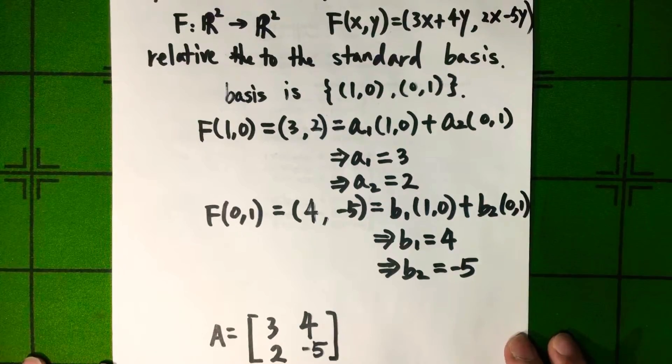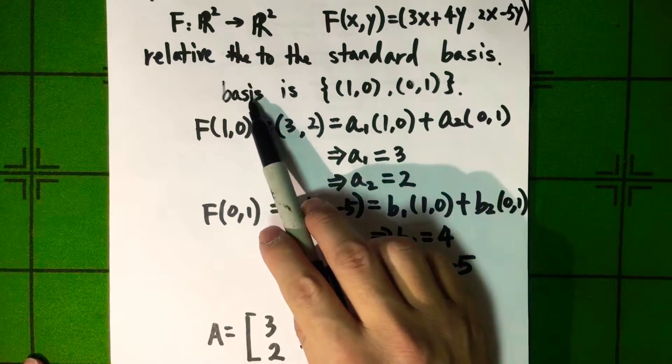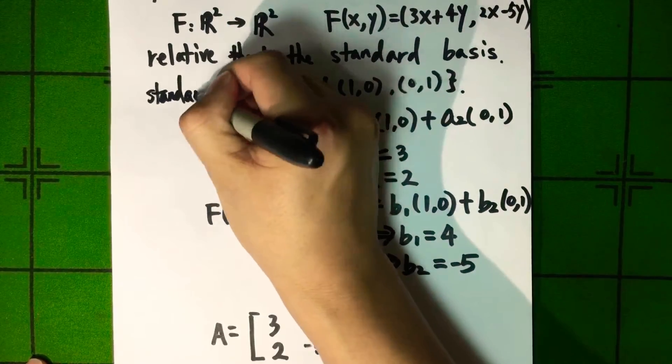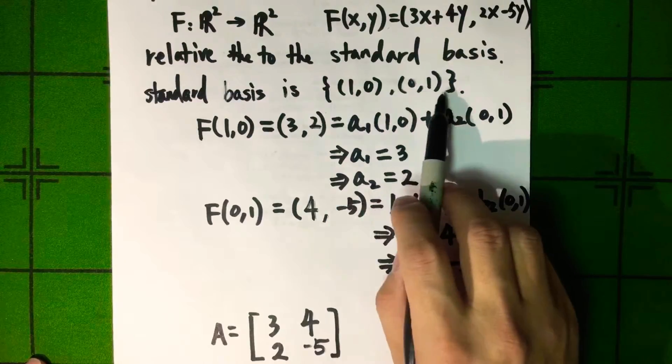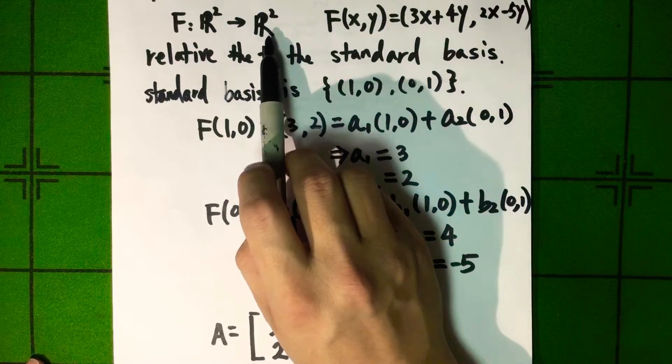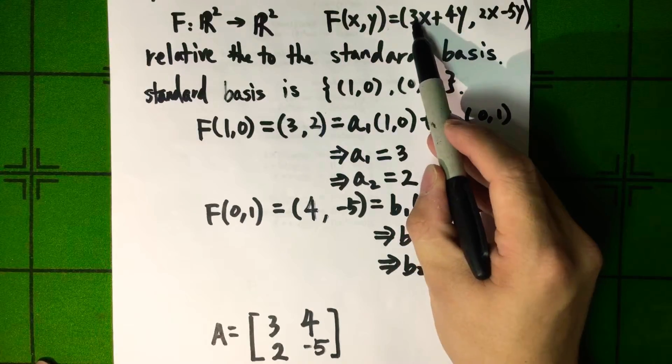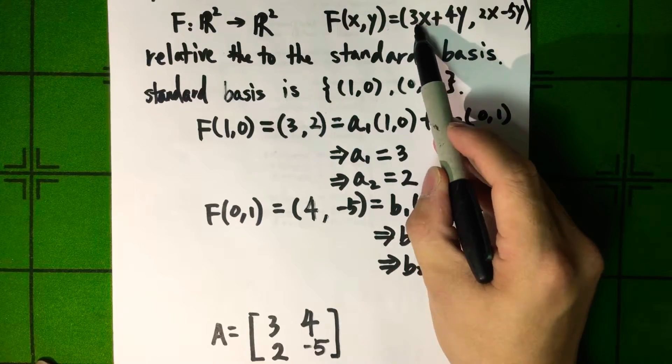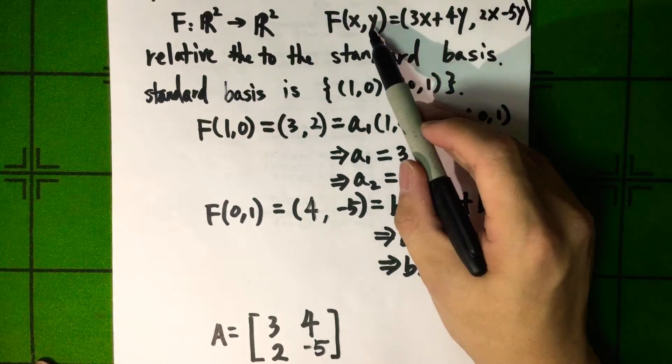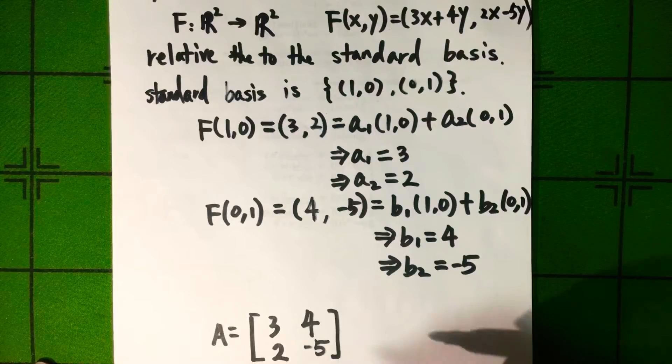Notice that from the beginning, if we are using the standard basis—(1, 0) and (0, 1)—for both the domain and the target, then we can just write the coefficients of the first coordinate as the first row and the coefficient of the second coordinate as the second row. So this is the shortcut.